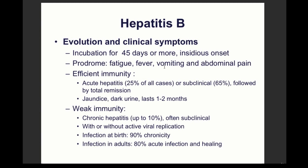After 45 days of incubation there is an insidious onset of fatigue, fever, and vomiting. With efficient immunity, the patient goes through an acute phase followed by remission, possibly with jaundice and dark urine lasting one to two months. In patients with weak immunity — about 10% — the disease progresses to a chronic phase, with or without active viral replication, where the immune system controls but does not eliminate the virus.